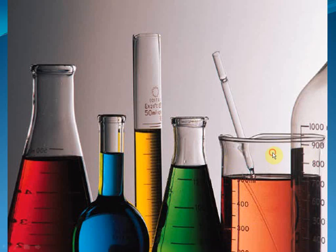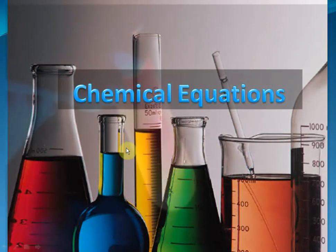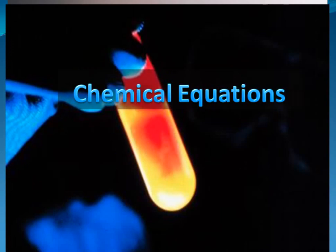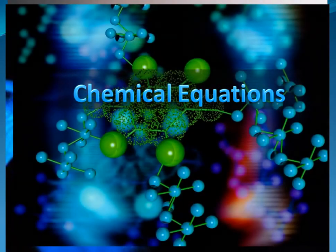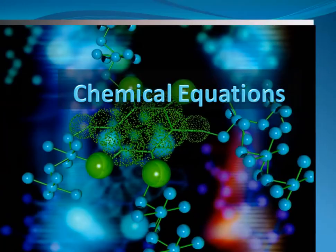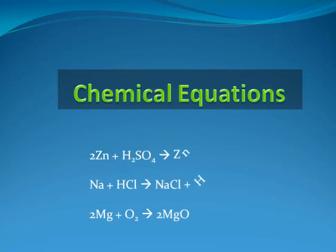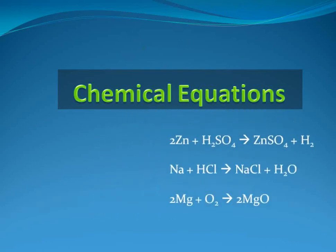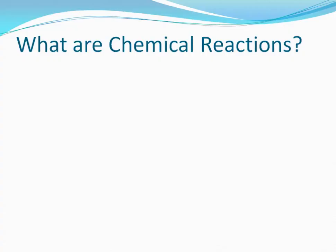Hi students, today we are going to learn about chemical reactions and chemical equations. You know, all the chemicals in the world can actually be represented by a chemical symbol — we already learnt about that in earlier classes. Now, we can represent every chemical reaction that takes place around us by means of a chemical equation. We will learn about all this and more in this chapter.